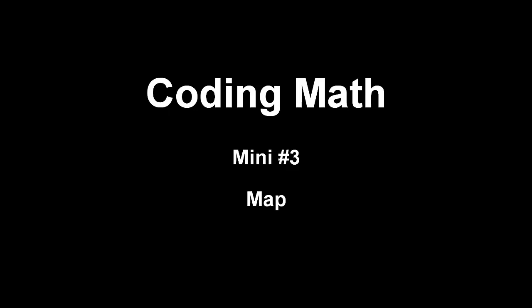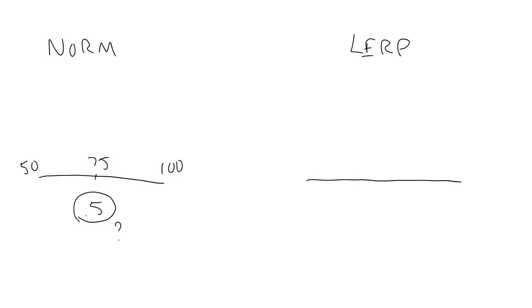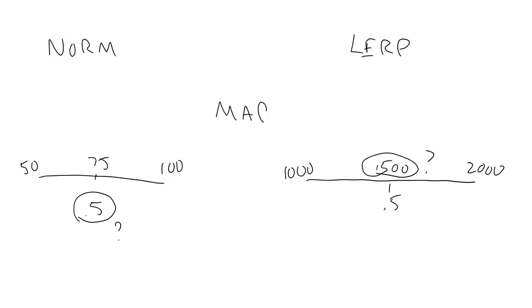This is Coding Math Mini number 3: Map. In the first of the series, we created a Normalize function that converted a value in a range to a normalized value from 0 to 1. In the next video, we created a Lerp function that did the opposite — took a normalized value and converted it into a value within a range. This time we'll create a Map function that combines the two functions and maps a value from one range into a value in another range.